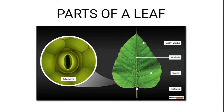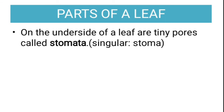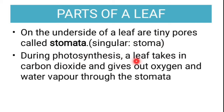The oxygen left by the leaves is taken by us, and the carbon dioxide we leave out is taken by plants — so we are all dependent on each other. On the underside of the leaf there are tiny pores called stomata. The spelling should be noted: S-T-O-M-A-T-A; singular is stoma. Stomata take in carbon dioxide and leave out oxygen and water vapor.